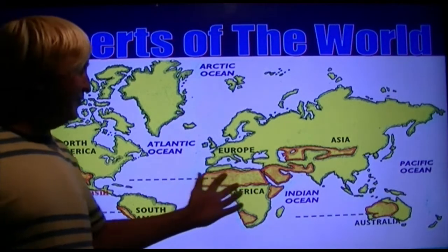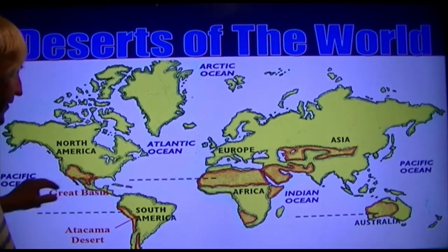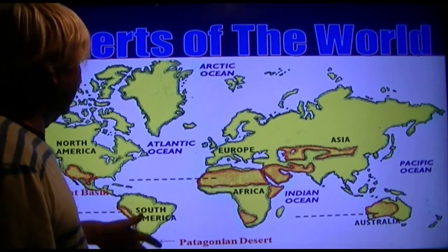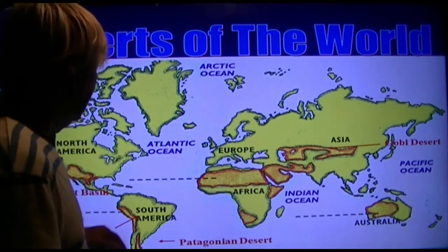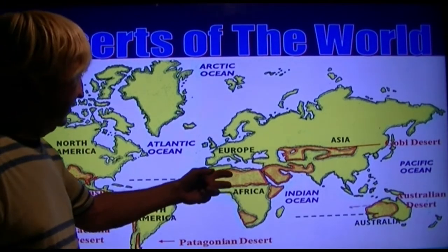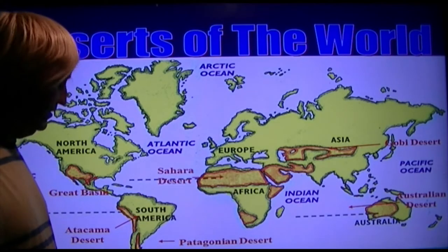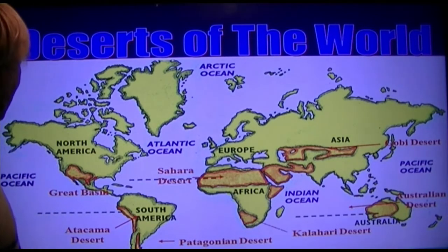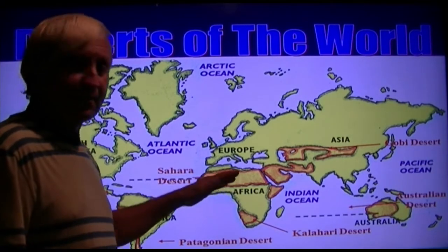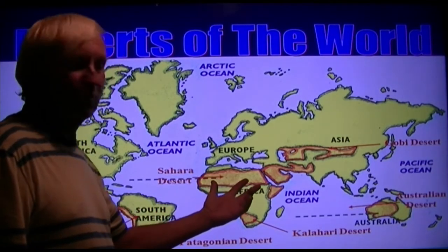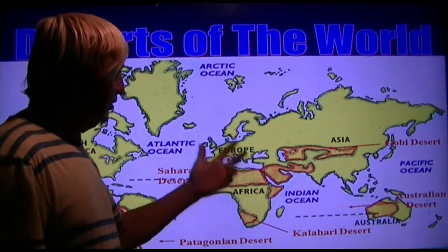This map shows desert distribution. True deserts occur 30 degrees north and south of the equator. The Sahara Desert is probably the best textbook example of a desert, occurring right at 30 degrees north latitude.